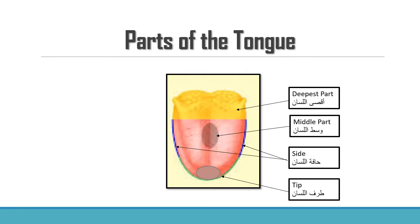The tongue can be divided into four parts: the deepest part of the tongue, the middle part of the tongue, the side of the tongue, and the tip of the tongue.